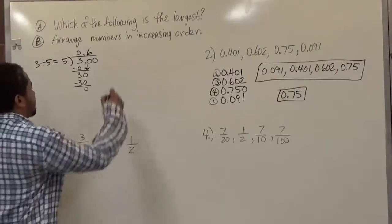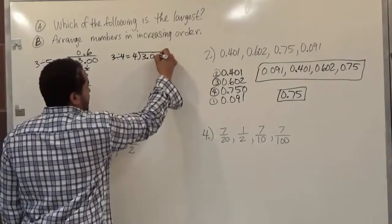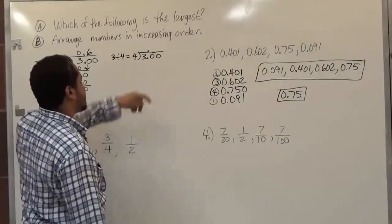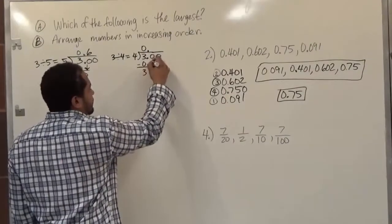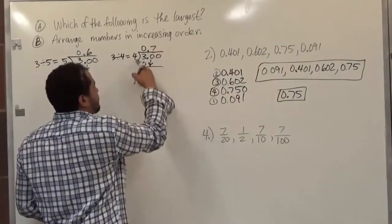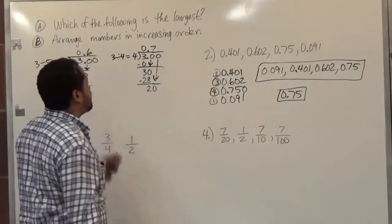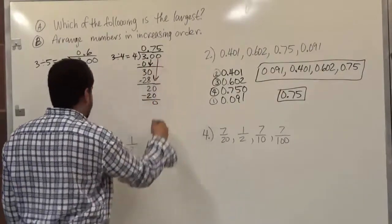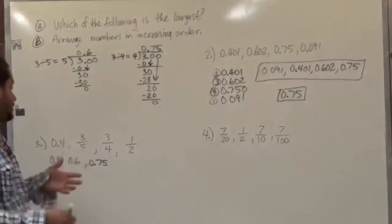Next we have 3 over 4, so 4 divides 3. We add two decimal places and bring up the decimal. 4 goes into 3 zero times; bring down the 0 to get 30, and 4 goes into 30 seven times giving us 28. Subtract to get a remainder of 2, bring down the next 0 to get 20. 4 goes into 20 exactly 5 times. So 3 quarters becomes 0.75 — and that sounds just like what it is: 3 quarters and change is 75 cents.